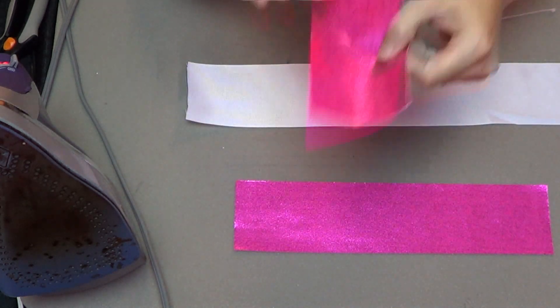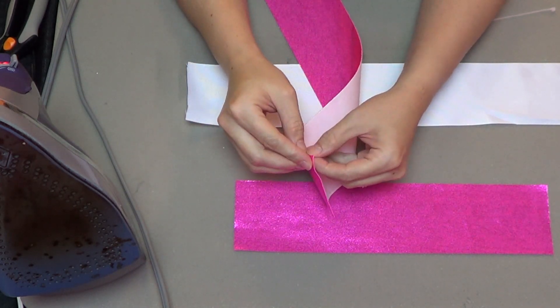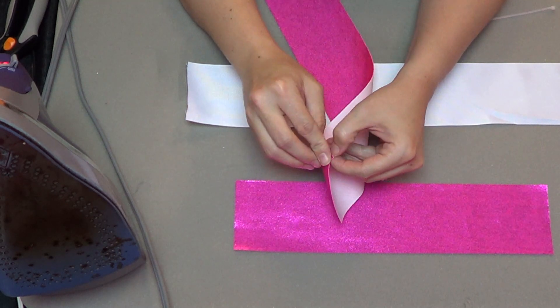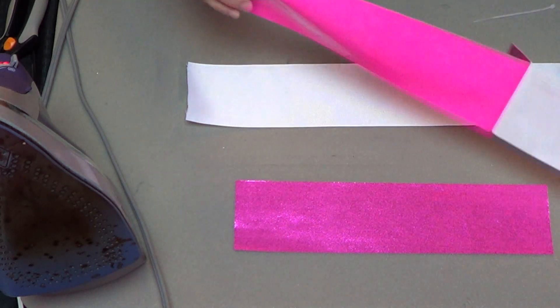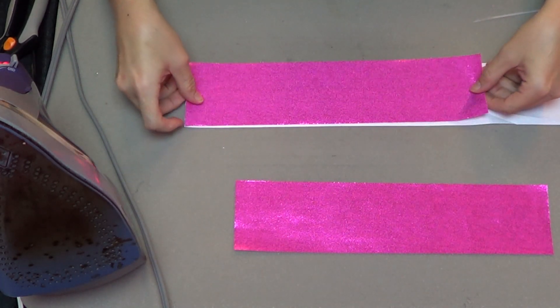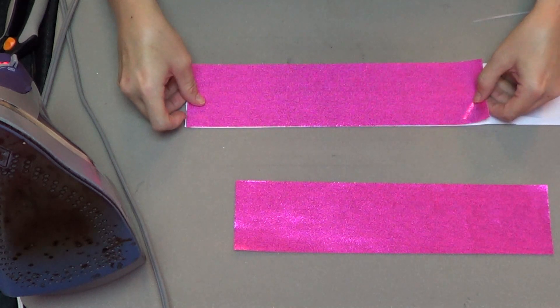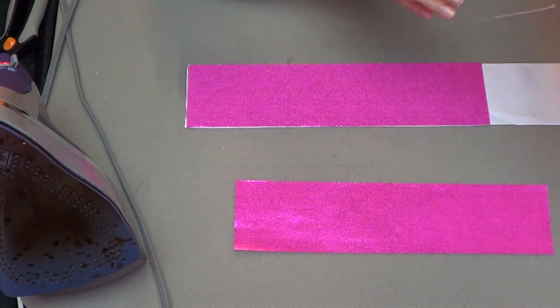I'm going to start by ironing on two pieces of mystique fabric to three inch wide grosgrain ribbon. We sell these with the heat and bond adhesive already applied to the back.